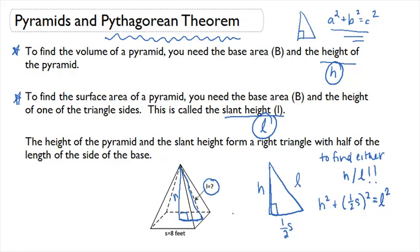This will give us a relationship between the slant height and the regular height. We will need that relationship because we may have to solve for one or the other before we can find the volume or surface area.